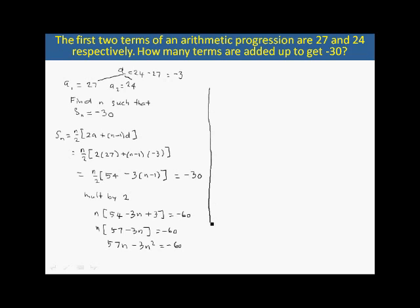Now, if we bring all these to one side, we have 3n² - 57n - 60 = 0.